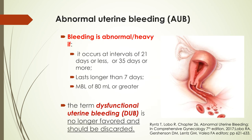So if your bleeding occurs at intervals of 21 days or less, or 35 days or more, it is Abnormal Uterine Bleeding. If the bleeding lasts longer than 80 days, or you have an MBL of 80 ml or greater, that is considered AUB. The term dysfunctional uterine bleeding, or DUB, is no longer favored and should be discarded.